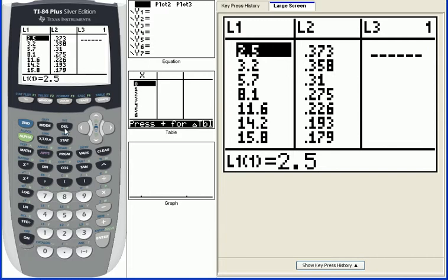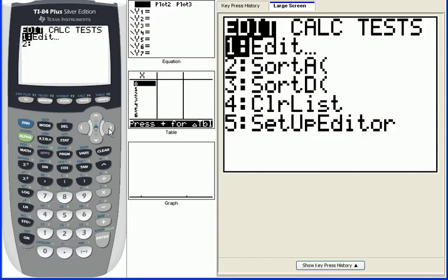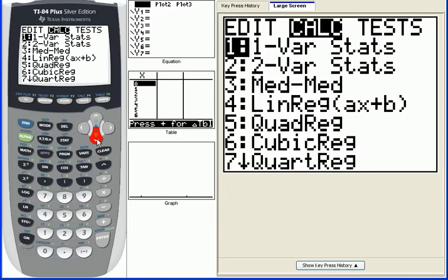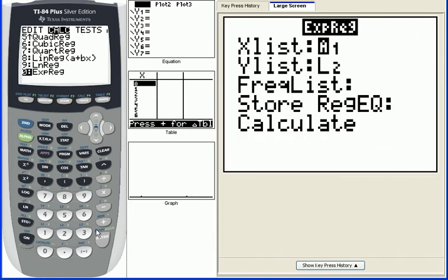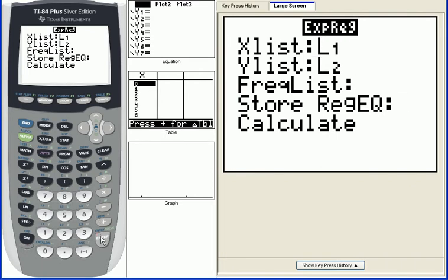And if we want to find a model, then we're going to hit our stat button, and we're going to go to the right to our calc menu, and we're going to find an exponential model. So remember, this is your EXP, which I think is number zero. So exp reg, we're going to find this.